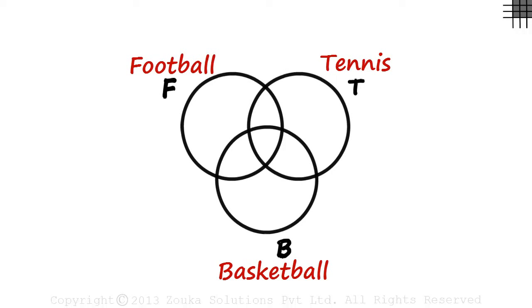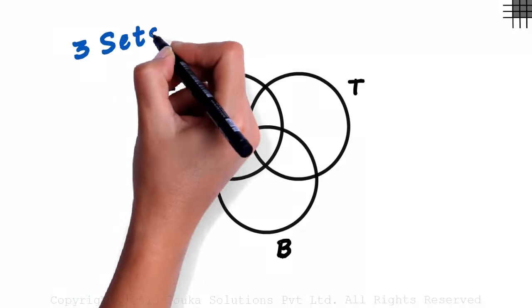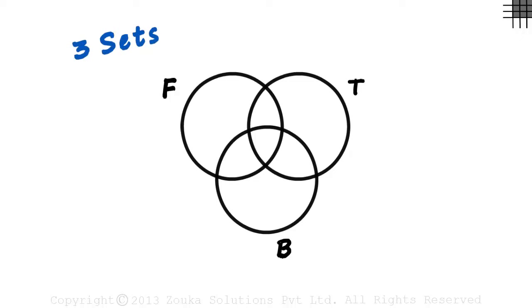We don't need to write elements inside the sets. All we have to do is understand the different regions. The concept of 3-set Venn Diagram remains the same as that of a 2-set one.